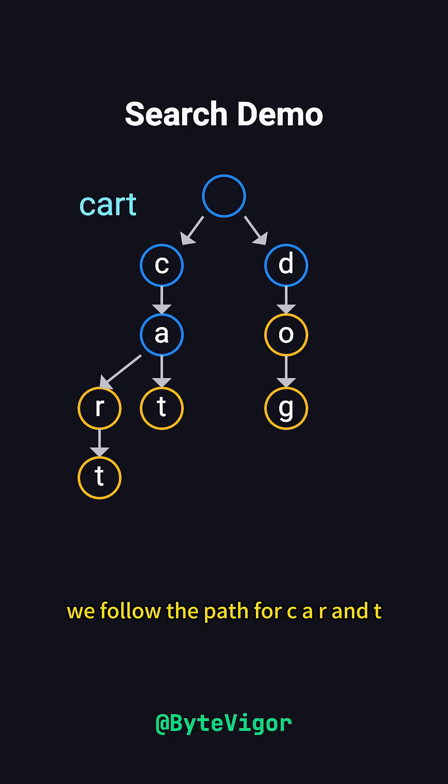To search for cart, we follow the path for c, a, r, and t, confirming it exists and ends at a valid node. For dom, we start at the root. But while d and o exist, m does not, so dom isn't in the trie.